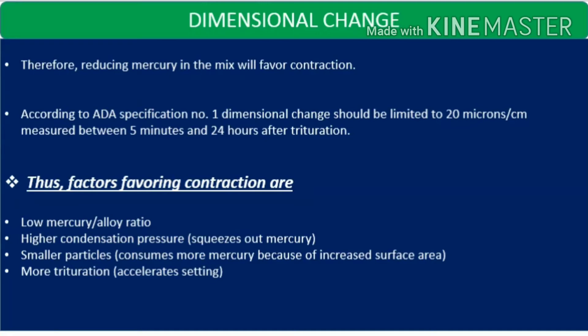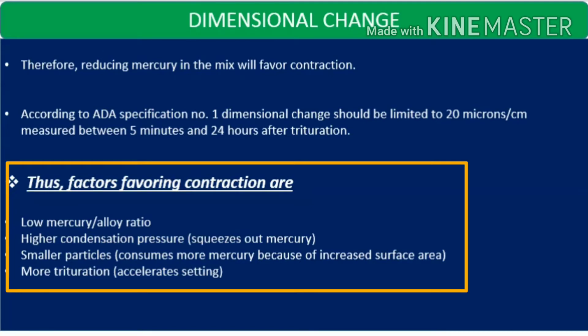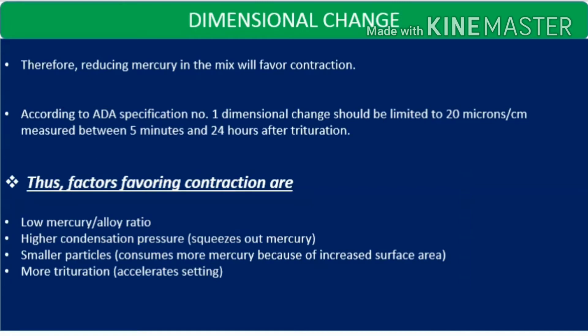According to American Dental Association specification number 1, dimensional change should be limited to 20 microns per centimeter, measured between 5 minutes and 24 hours after trituration. Factors favorable to contraction include: low mercury to alloy ratio, higher condensation pressure which squeezes out excess mercury, smaller particles which consume more mercury due to increased surface area, and more trituration which accelerates setting.